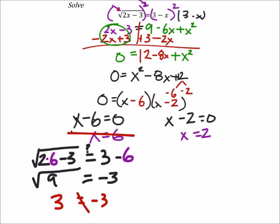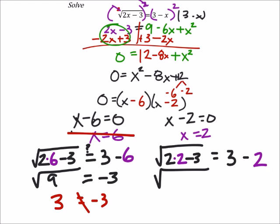Let's try x is 2. I've got the square root of 2 times my x, which is now 2, minus 3. This should equal 3 minus x, which is 2. So I'd have the square root of 2 times 2 is 4, minus 3 is 1. This should equal 3 minus 2 is 1. The square root of 1 is 1, and 1 does equal 1. This is true. So I know right now my answer is x equals 2.